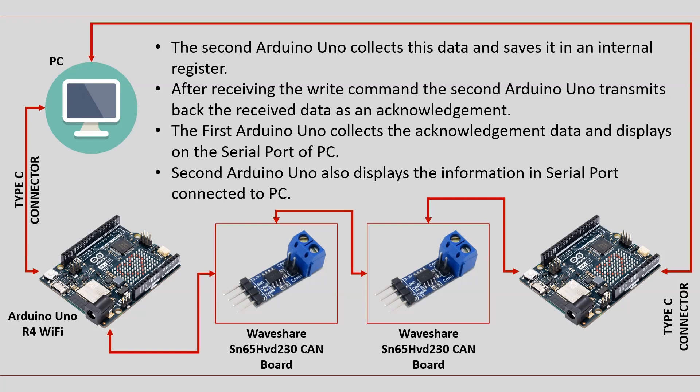The second Arduino UNO collects this data and saves it in an internal register. After receiving the write command, the second Arduino UNO transmits back the received data as an acknowledgement. The first Arduino UNO collects the acknowledgement data and displays it on the serial port of the PC. The second Arduino UNO also displays the information on its serial port connected to the PC.